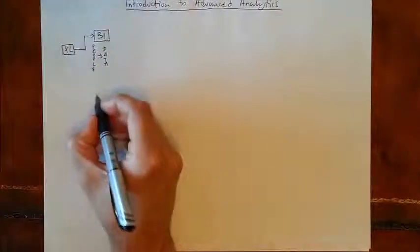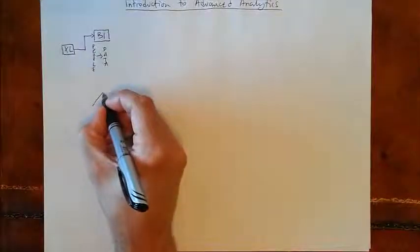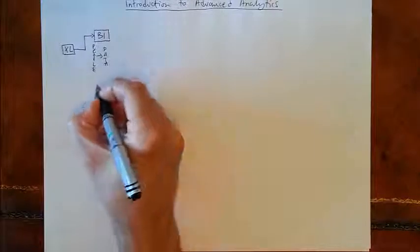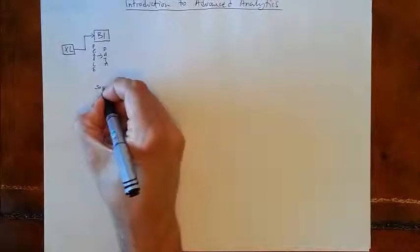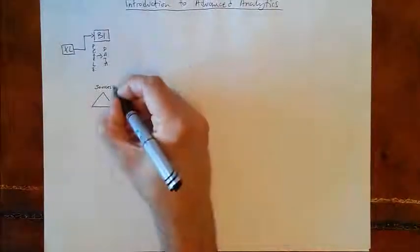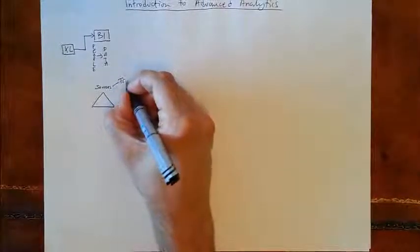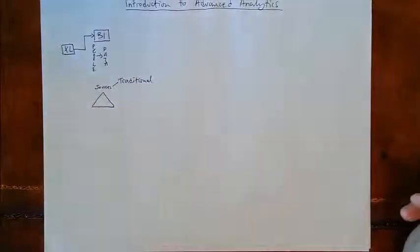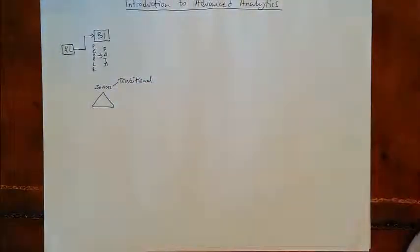In the real world, data is never simple. There's something called a data triangle. The first angle here is data sources. There are two types of data sources that we work with. There are the traditional data sources, and these are data sources such as databases, Excel spreadsheets, transactional systems, data warehouses, et cetera.